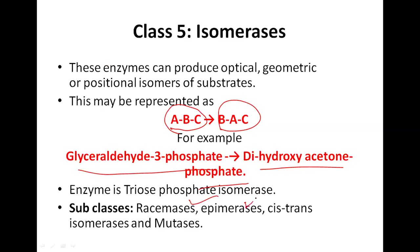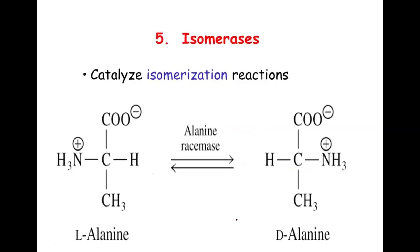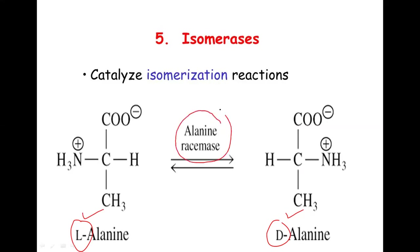Subclasses of isomerases include racemases, epimerases, cis-trans isomerases, and mutases. An example of an isomerization reaction is the conversion of L-alanine to D-alanine — these are optical isomers because they are mirror images of each other. Just as your right hand and its mirror reflection appear as a left hand, D-alanine and L-alanine are mirror-image arrangements of the same compound.